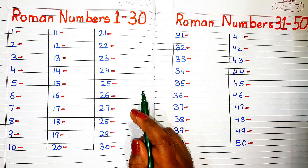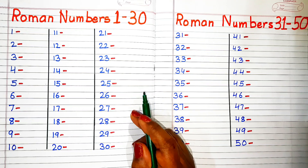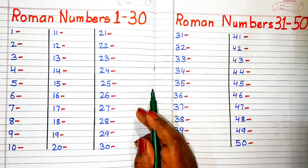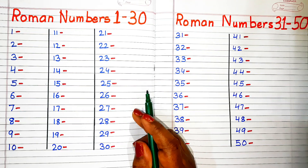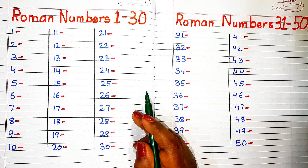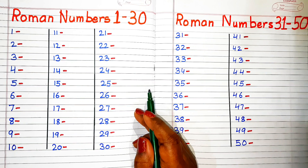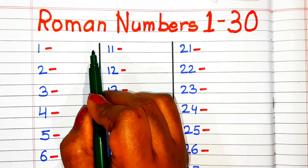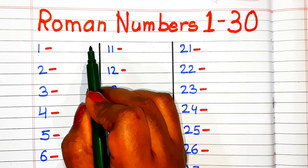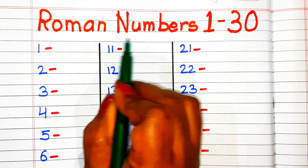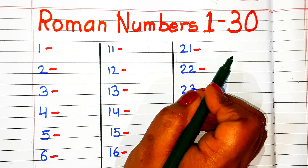Hello everyone, welcome to channel Simple Easy Learning. Today's video topic is Roman numbers. In this video, we will learn Roman numbers 1 to 50. At first, we will learn to write Roman numbers 1 to 30.